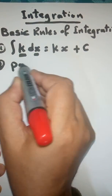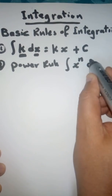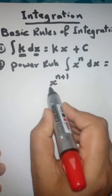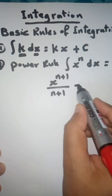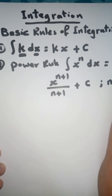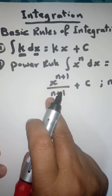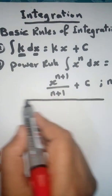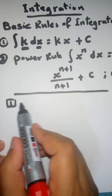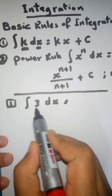Number two: the power rule. The integral of X to the power n with respect to X equals X to the power n plus 1, divided by n plus 1, then add the constant of integration C, where n is not equal to negative 1, because negative 1 plus 1 would be 0 and we cannot divide by 0.